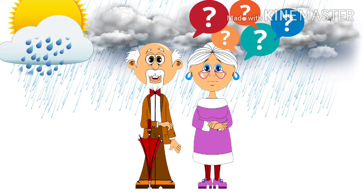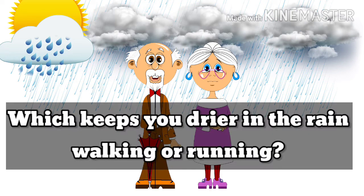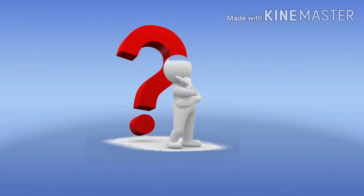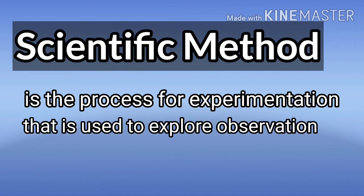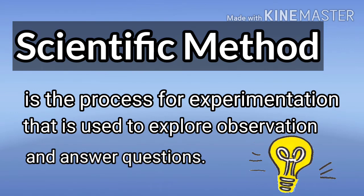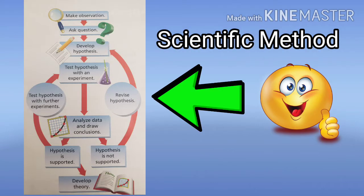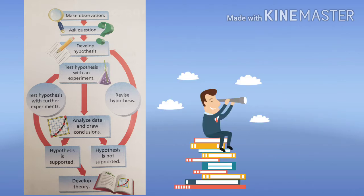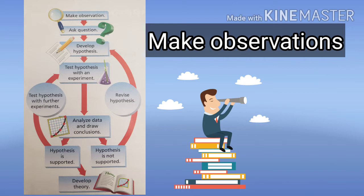You now have a question you can try to answer with a scientific approach: which keeps you drier in the rain, walking or running? To answer this question, we are going to use the scientific method. The scientific method is the process for experimentation that is used to explore observations and answer questions. The figure on the left outlines an example of the scientific method, and each step involves specific skills.